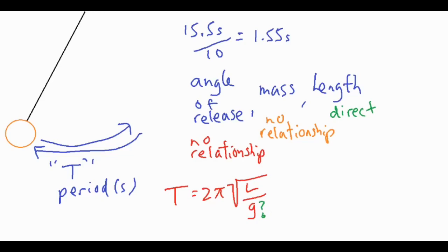You want to find the length. For the length, what you want to do is actually measure it from its pivot point to the center of mass of the object.